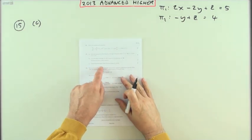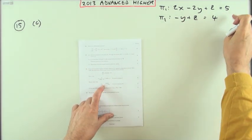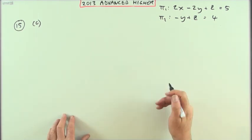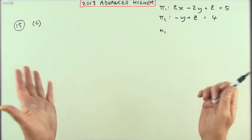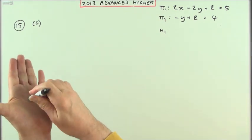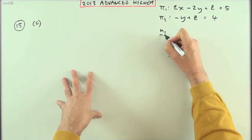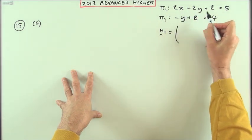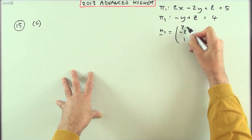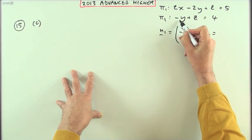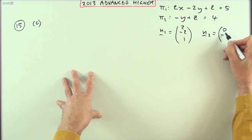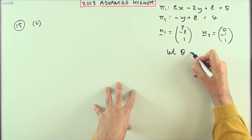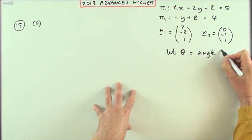Part C: determine the acute angle between the two planes. Straightforward enough—the angle between the planes will be the same as the angle between their normals, because as the planes rotate, their normals must rotate by the same amount. Plane one has normal vector (2,-2,1), plane two has (0,-1,1). Let θ equal the angle between planes π₁ and π₂.